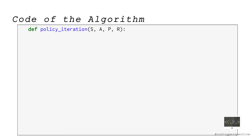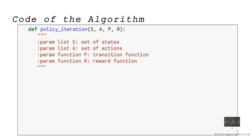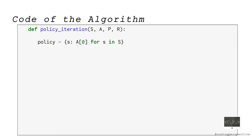Now let's code this algorithm in Python by writing a function called policy_iteration. The inputs of this function are the set of states S as a list, the set of actions A as a list, the transition function P as a function, and the reward function R as a function. These inputs are problem-specific. I will define them for a specific example later. In the algorithm, we first initialize a policy dictionary by setting its value to some arbitrary feasible action for each state S. Here I choose to set them to the first element of action set A. Then we have a while loop with a condition set to true.